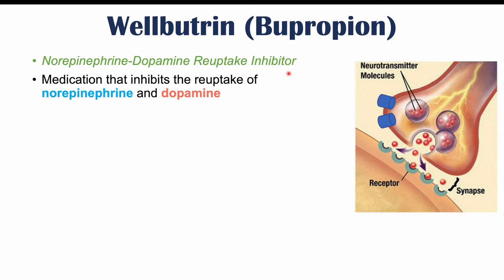So what happens is that you have two neurons — a presynaptic and postsynaptic neuron. The presynaptic neuron is the one that's going to release the neurotransmitters into a gap between the neurons known as the synapse. And then those neurotransmitters are going to bind to receptors on the postsynaptic neuron.